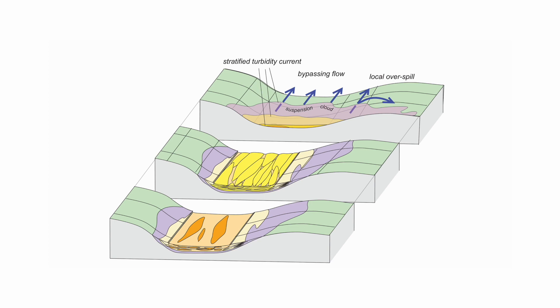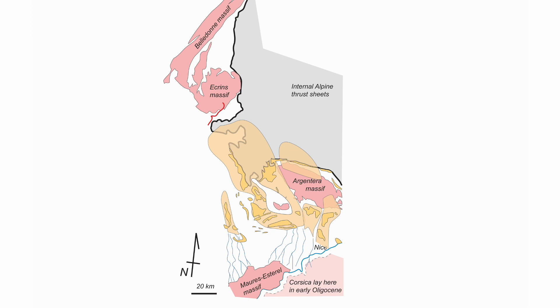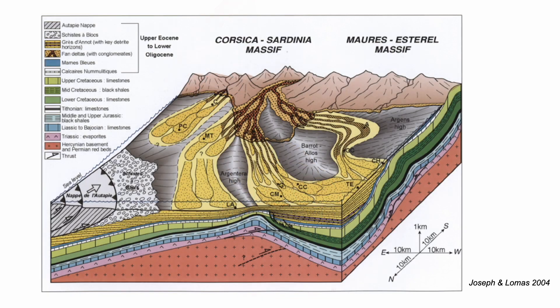All of which means that turbidites in the geological record are fantastic recorders of ancient active tectonic structures that influenced the form of the seabed. And because the flows went downhill, they seek bathymetric lows. Turbidite systems are great for reconstructing large scale basin structures.